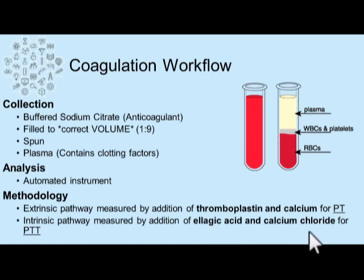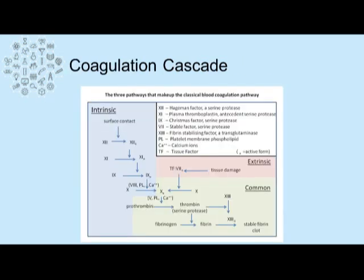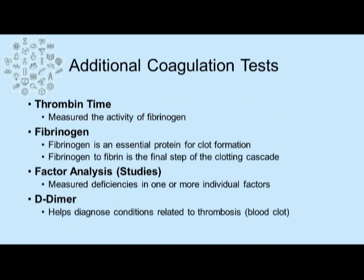The PTT is usually around 25 seconds. Additional tests that can be performed in the coagulation department include the thrombin time, which measures the activity of fibrinogen. Fibrinogen can be measured directly — it is an essential protein in clot formation, and fibrinogen-to-fibrin conversion is the final step in the clotting cascade, acting to form a stable clot. In addition to PT, PTT, fibrinogen, and thrombin time, more advanced labs can measure individual factors — known as factor studies or factor analysis — which give an idea of an individual deficiency in one of the factors of the coagulation cascade.